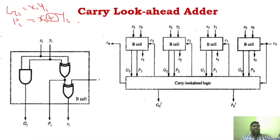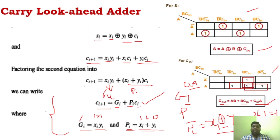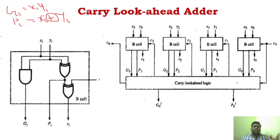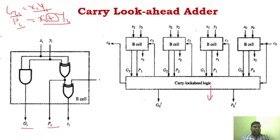This is the basic cell of a carry look-ahead adder. To generate Gi, use an AND gate with inputs Xi and Yi. To generate Pi, use an XOR gate with inputs Xi and Yi. This gives us the generate and propagate outputs from each basic cell.